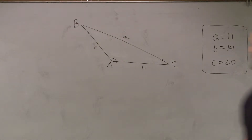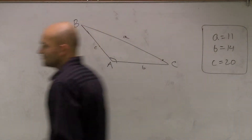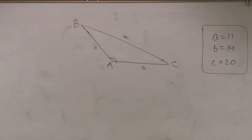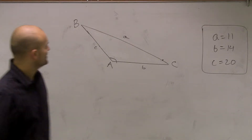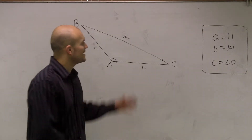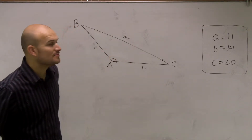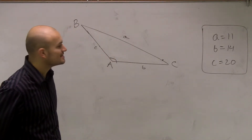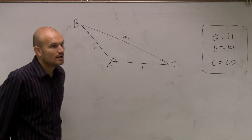All right, so for this problem, we have a triangle. And on this triangle, we have A equals 11, B equals 14, and C equals 20.